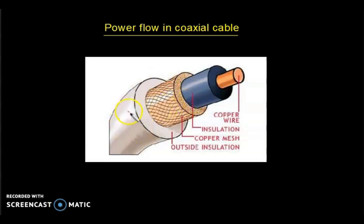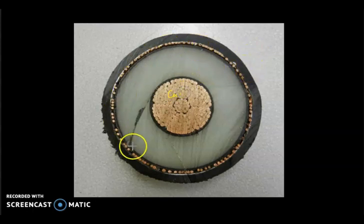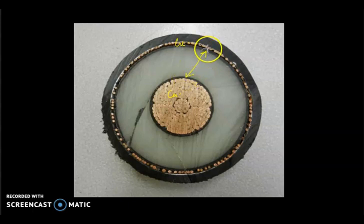Now let us move on to derive the expression for power flow — specifically, what is the power when there is a current flow through the inner copper wire in the coaxial cable. This is the cross-section of the coaxial cable. Here we can see the inner conductor, made of copper, and the outer conductor, also made of copper, with a separation between them.